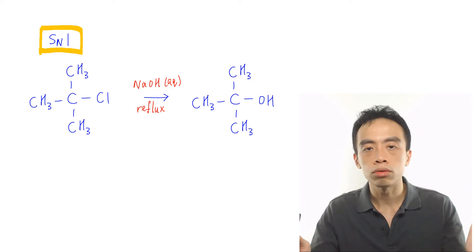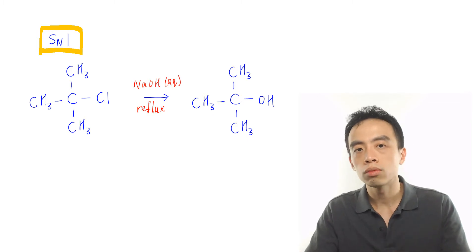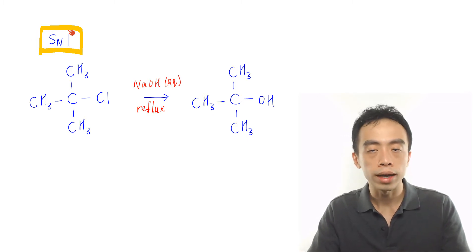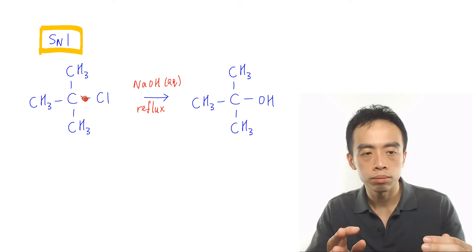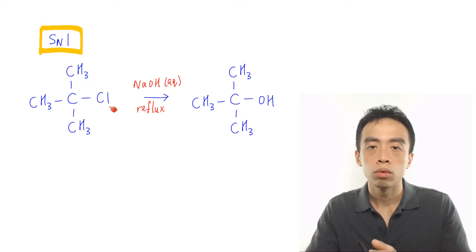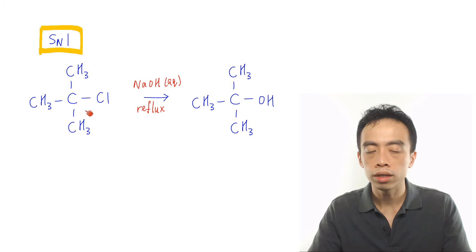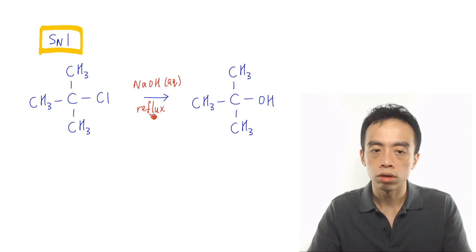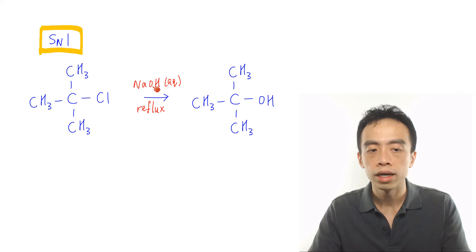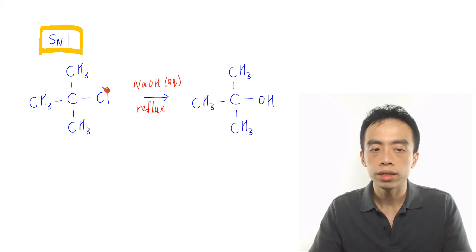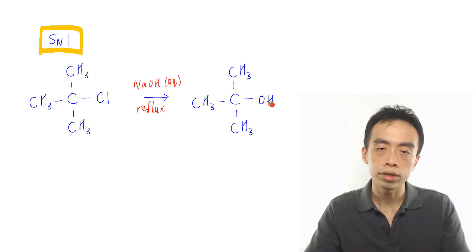It is broken down into two different pathways. The first one we call SN1 mechanism. SN1 mechanism in general is favored by tertiary halides — we will explain that shortly. Let's go through the mechanism first using this example: a tertiary chloroalkane. The reagents and conditions for nucleophilic substitution will be NaOH aqueous, heat or reflux, and we will be substituting the Cl with an OH group. SN1 mechanism is a two-step process.